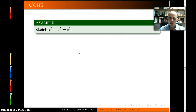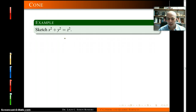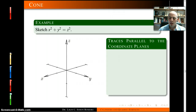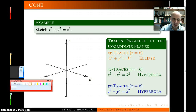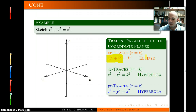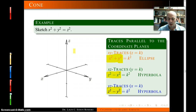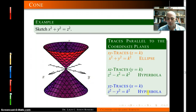Cones look almost like an elliptic paraboloid, but z is also raised to the square. Because of that, you no longer get parabolas as traces since there's no longer a difference between one variable squared and another not squared. The traces are: one ellipse, and the other two traces are hyperbolas — because once you move variables to one side you get a minus sign. So ellipse, hyperbola, hyperbola gives you a cone.